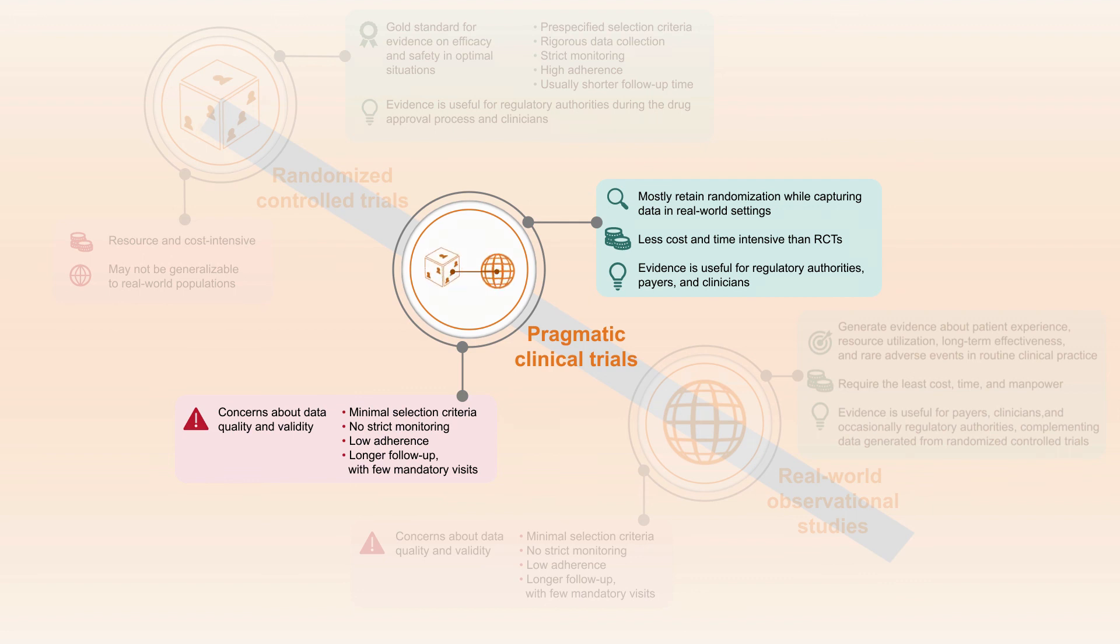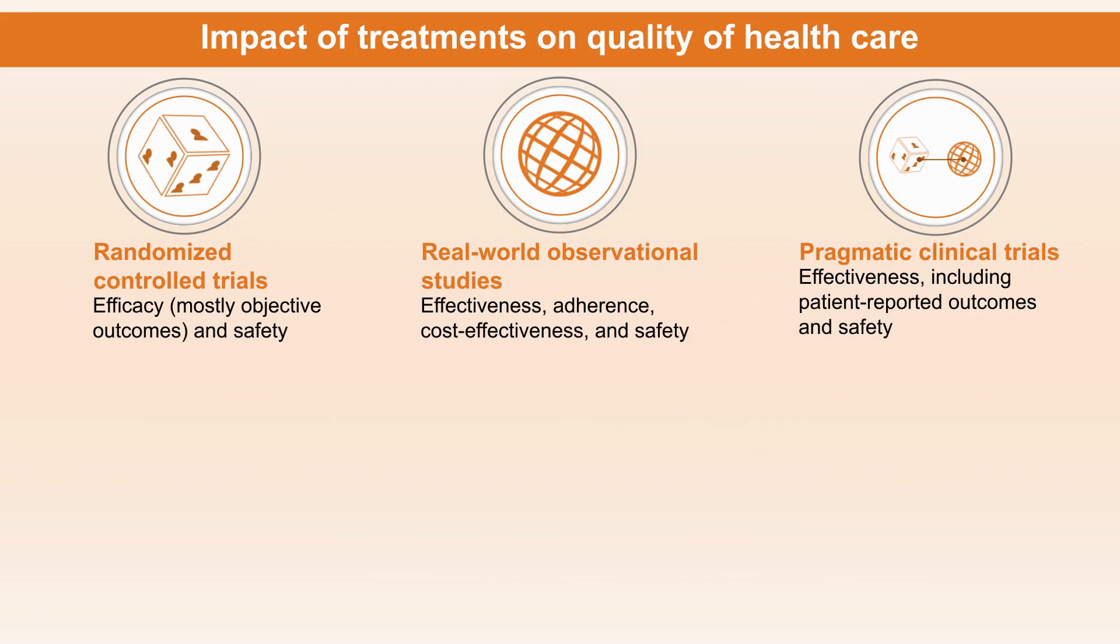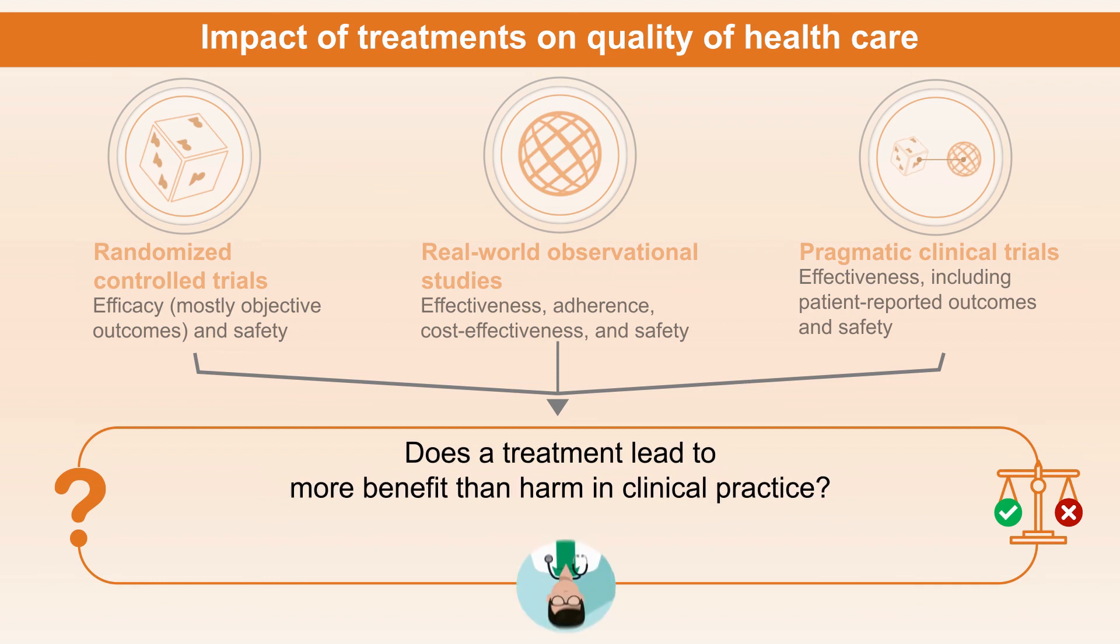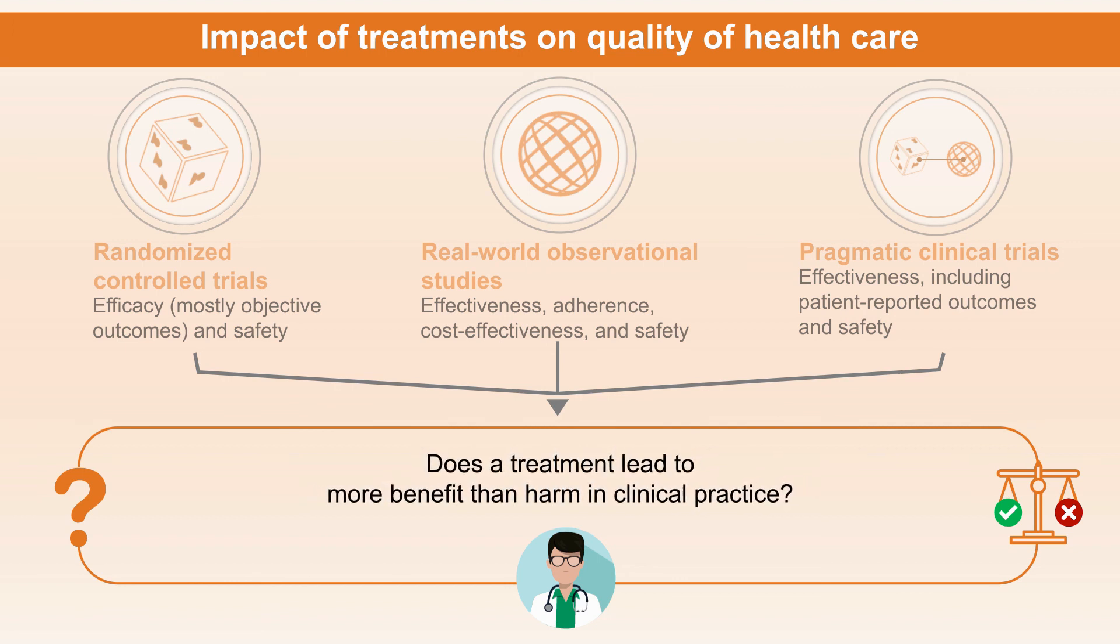In summary, RCTs, RWEs, and PRCTs complement each other and foretell the impact of interventions on clinically important outcomes as understood with examples of clinical research in COPD. These different types of studies, when taken together, help researchers and clinicians make better-informed, data-driven decisions and answer the overarching question: Does a treatment lead to more benefit than harm in clinical practice?